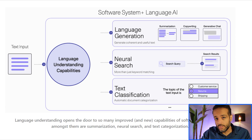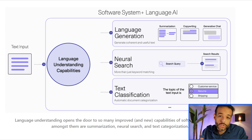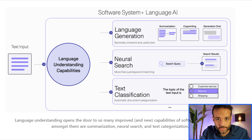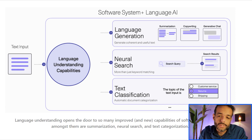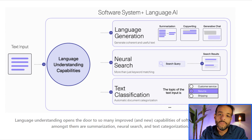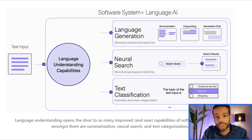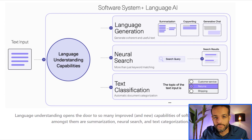But that's not the only thing you can do with a language AI system that you can build right now. Neural search is another one that improves search systems beyond just keyword matching. We can also build text classification systems — automatically tagging messages, emails, or documents. These are highly reliable AI use cases that are ready for the marketplace now, ready to be built into products, and you can do incredible things with them if you wield them as AI capabilities.